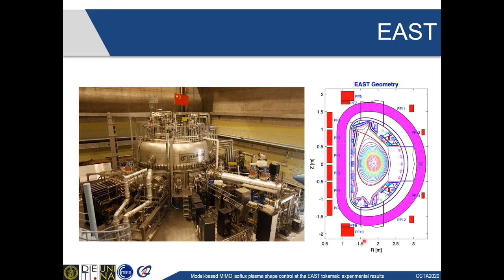The pairs PF7-PF9 and PF8-PF10 are connected in series. We also have two in-vessel coils that you can see in red inside the chamber and that are used for vertical stabilization, and you can also see available magnetic probes in the post location.